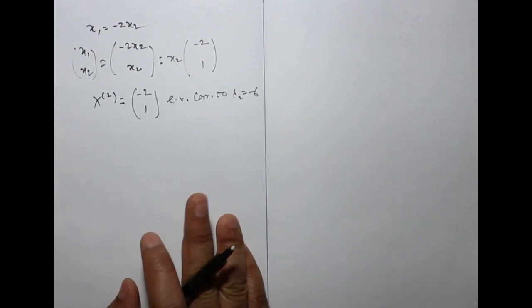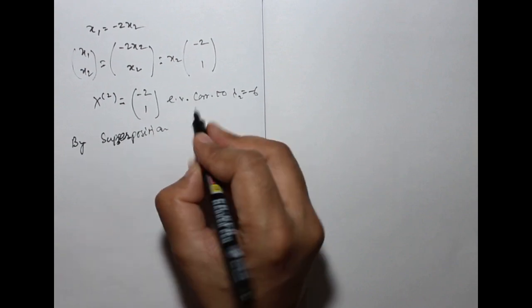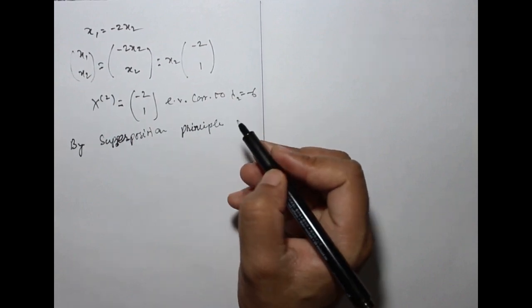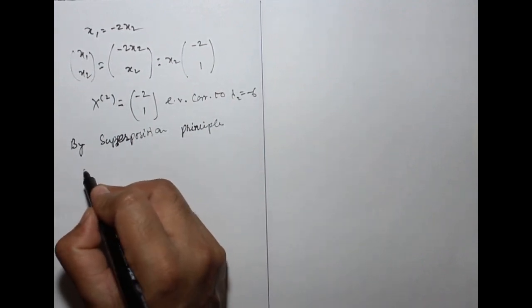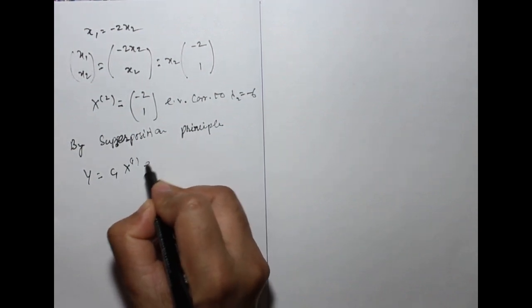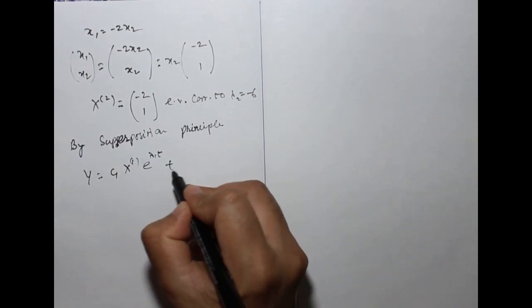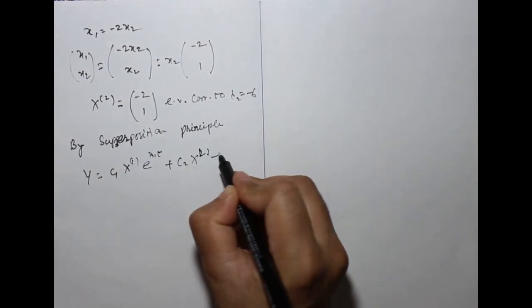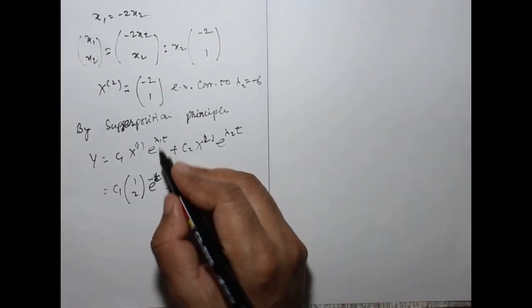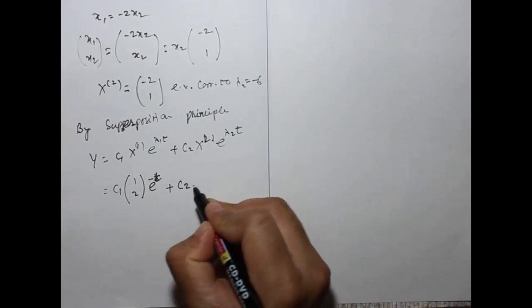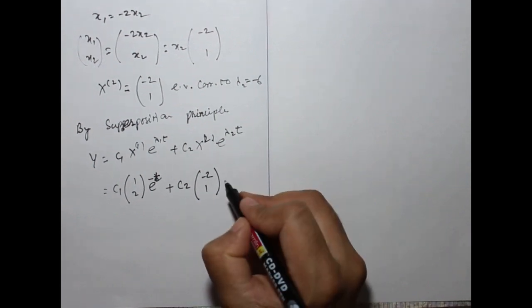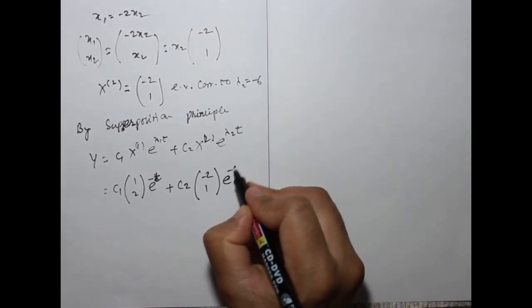By the superposition principle, the general solution is: Y = c1·X1·e^(λ1·t) + c2·X2·e^(λ2·t) = c1·[1; 2]·e^(−t) + c2·[−2; 1]·e^(−6t).